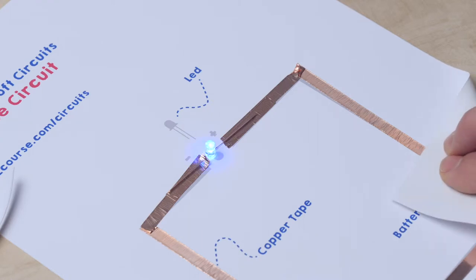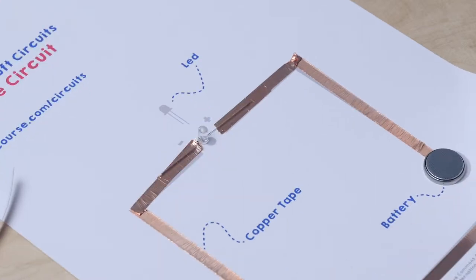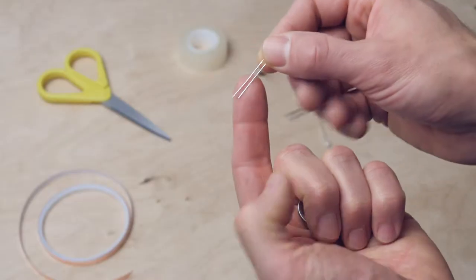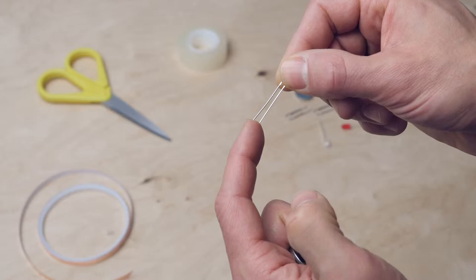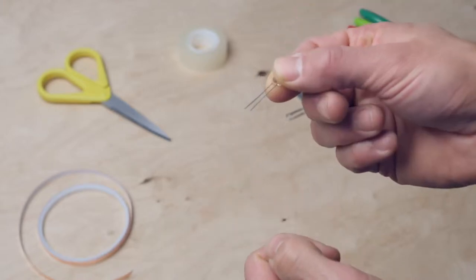Always make sure that the plus side of the LED is in contact with the plus side of the battery. And this is really handy, the plus pin of the LED is always a little longer so you can tell the plus and minus sides apart.